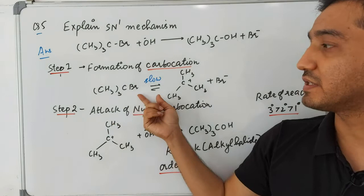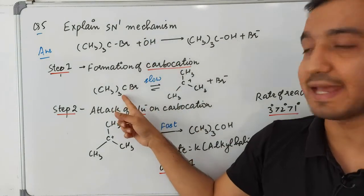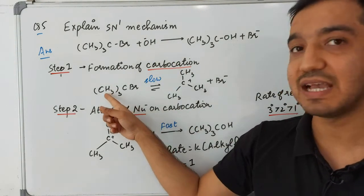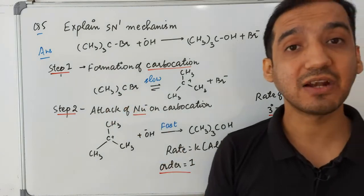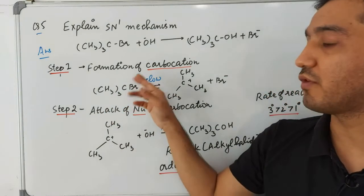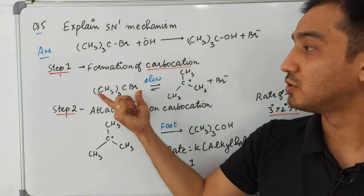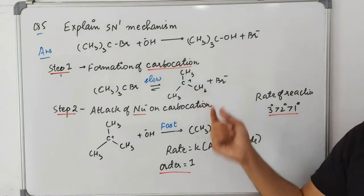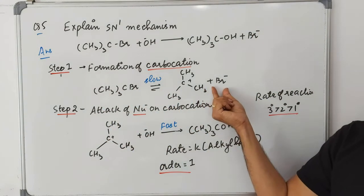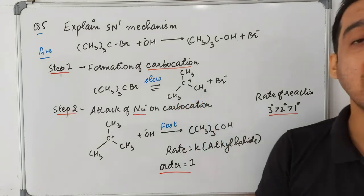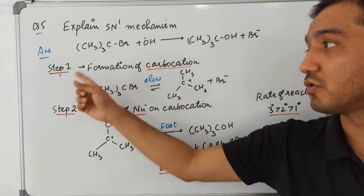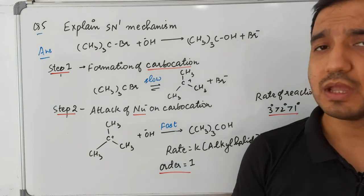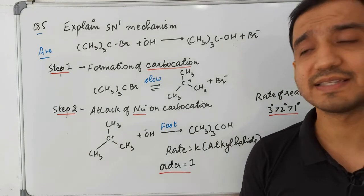In the first step of SN1, the nucleophile cannot attack the carbon directly because it is surrounded by CH3 groups and Br — it is an electron-rich environment. So first, the Br group is removed, resulting in the formation of Br⁻ and a carbocation. This is the first and slowest step — formation of the carbocation.